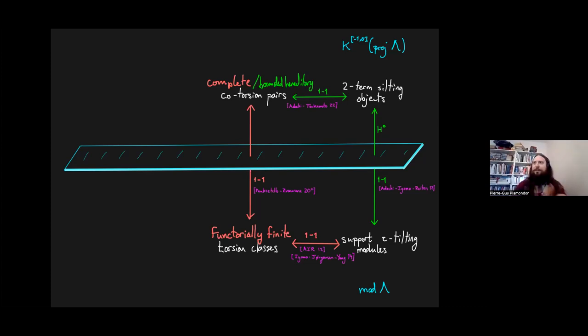Now, I'd like to talk about the third class of objects, which has appeared already today, wide subcategories of the module category. So, a wide subcategory is an abelian subcategory of mod Λ. It's a subcategory that's closed under extensions, kernels, and cokernels. Now, we know that functorially finite wide subcategories are in bijection with functorially finite torsion classes.